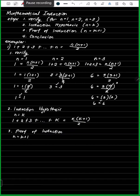For the proof of induction, this is the hardest part of the three steps because you need a basic foundation in algebra — you need to recall your algebra so that this step becomes easier. We need to prove that the left side is equal to the right.